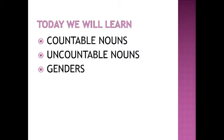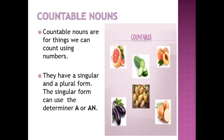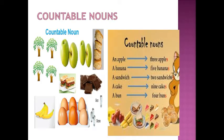Today we learn countable nouns, uncountable nouns, and genders. Let's see the definition. Countable nouns are for things we can count using numbers. They have a singular and a plural form. The singular form can use the determiner a or an. In the picture, you can see many countable nouns. Our examples are: thousands of children, hundreds of bottles, two minutes.